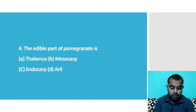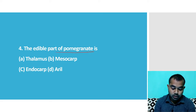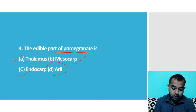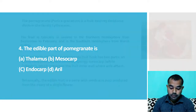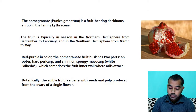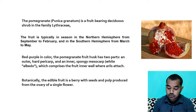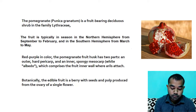The fourth question: the edible part of pomegranate is? Options given are thalamus, mesocarp, endocarp, and aril. The right answer is aril — this is the aril, as you can see here.